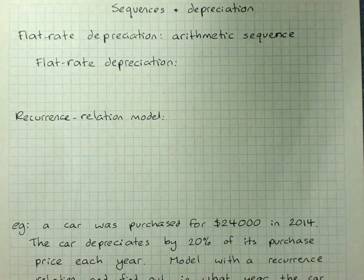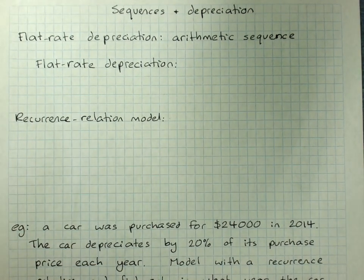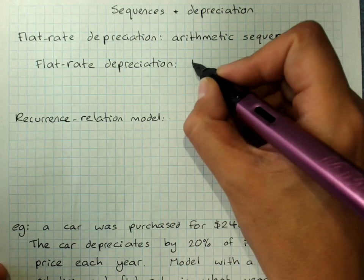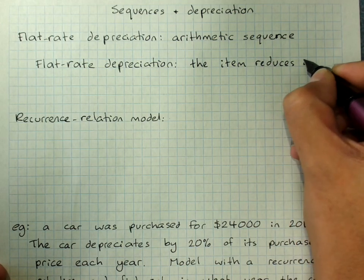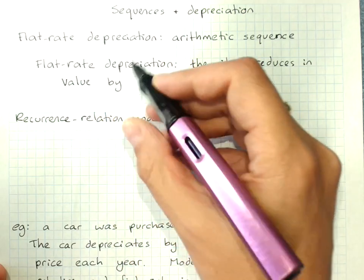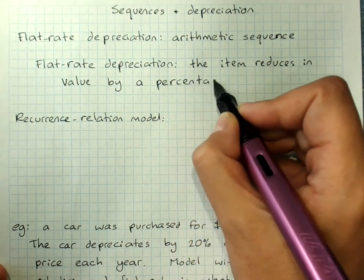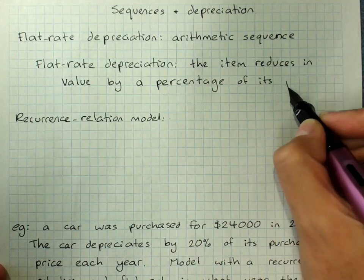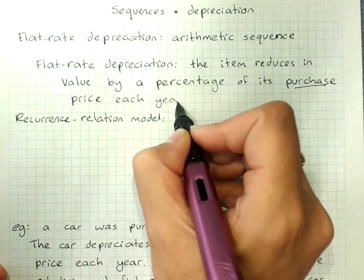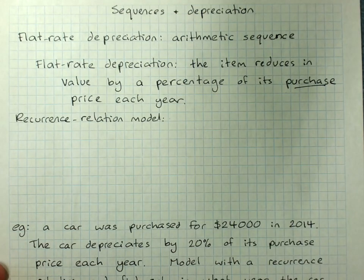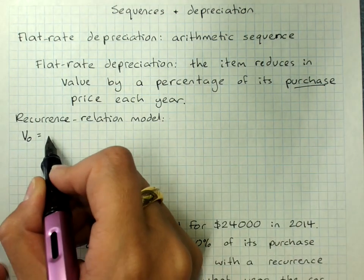One is flat rate depreciation. This is an arithmetic reduction — that means it drops by the same amount each year. The item reduces in value by either a fixed amount, or usually a percentage of its purchase price, which is a fixed amount. V0 is our initial purchase price.